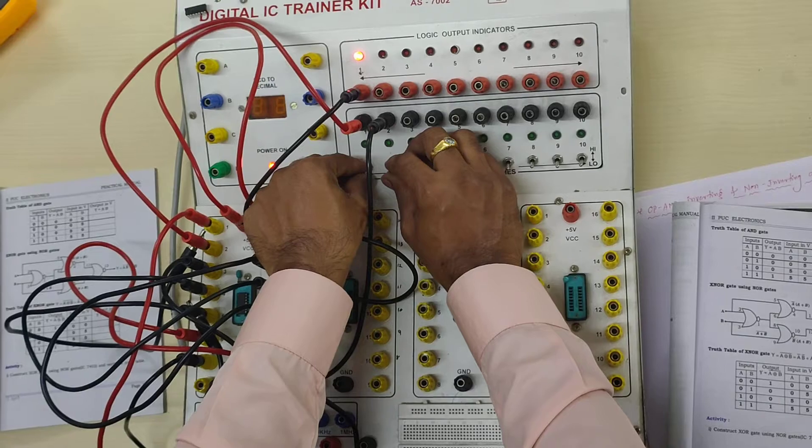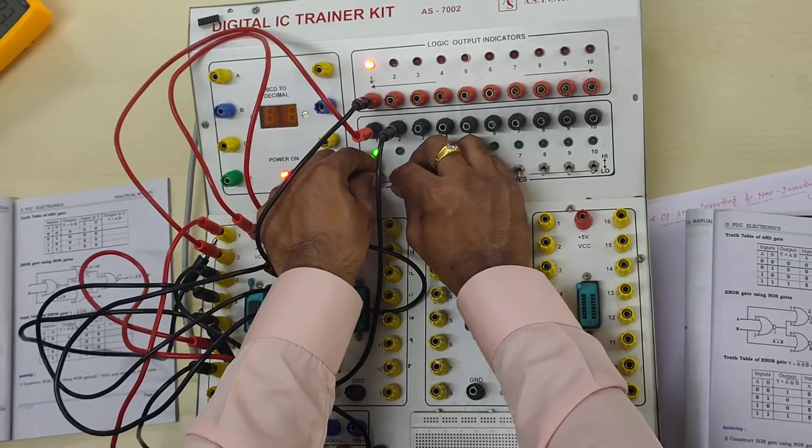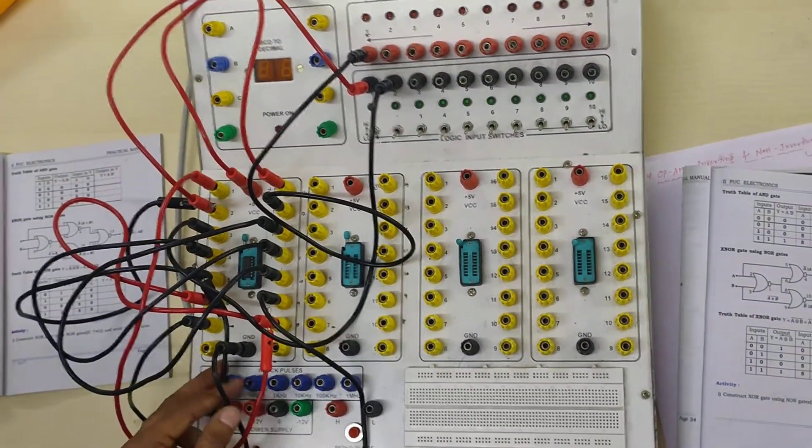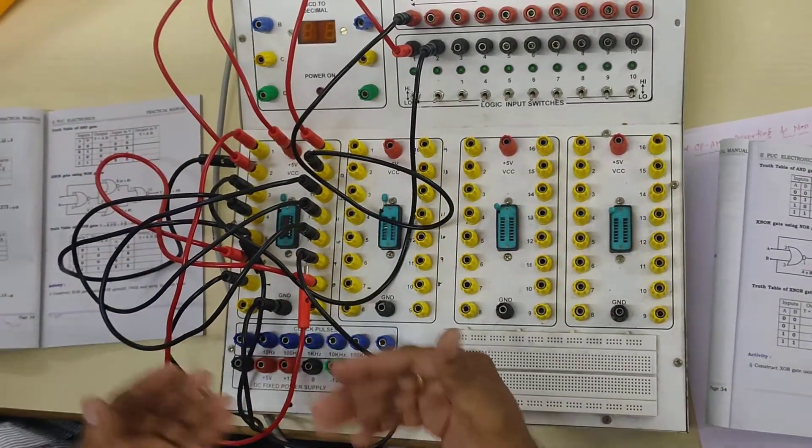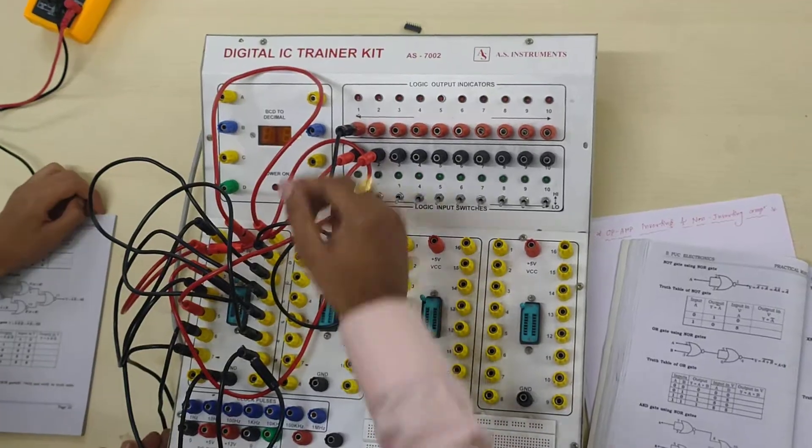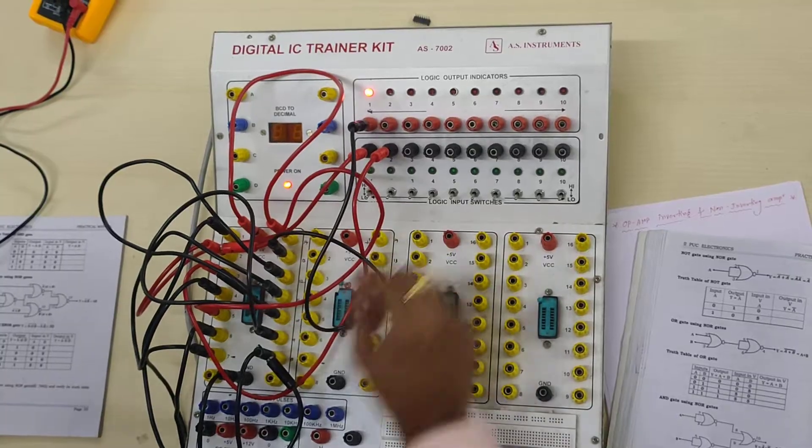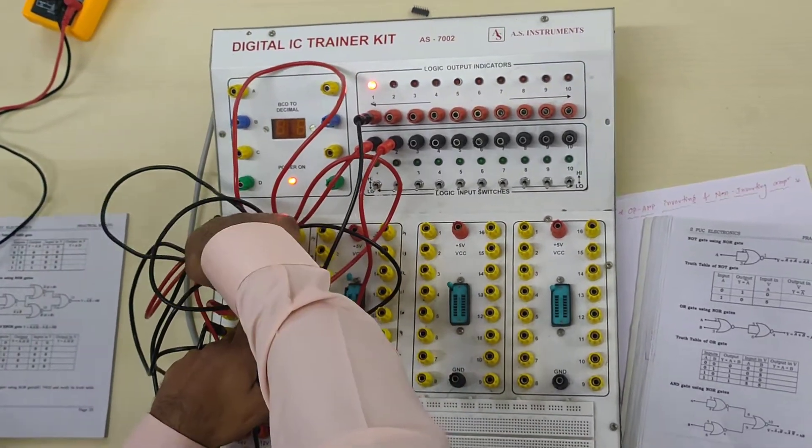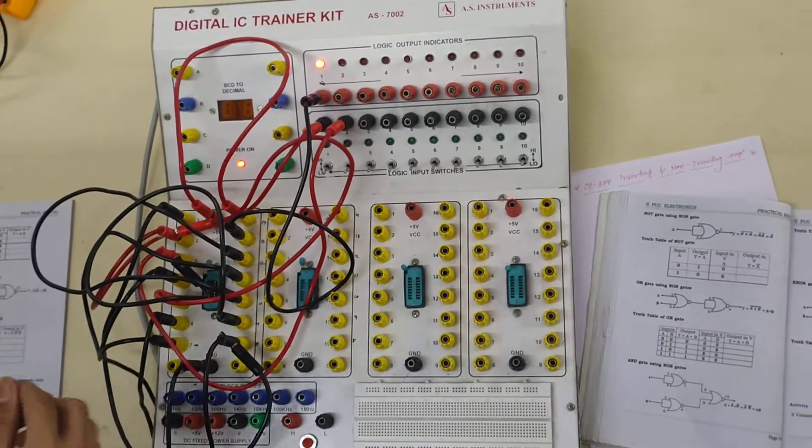So, it is 0, 0. 0, 1, 1, 0. You have done a small mistake over here. Probably that is the reason it is not coming. Let we do once again. Let we do once again. Sometimes there will be a loose connection also, probably it might not come. Now, you just check once again. One second, one second. IC has to be mounted properly otherwise also let me persist. Fine. Now, you please do it.